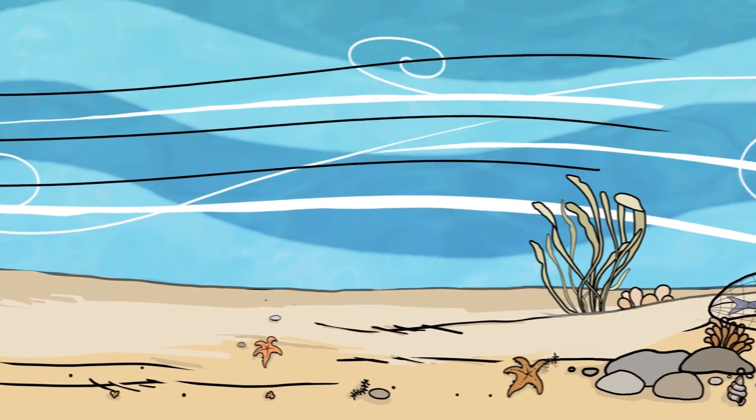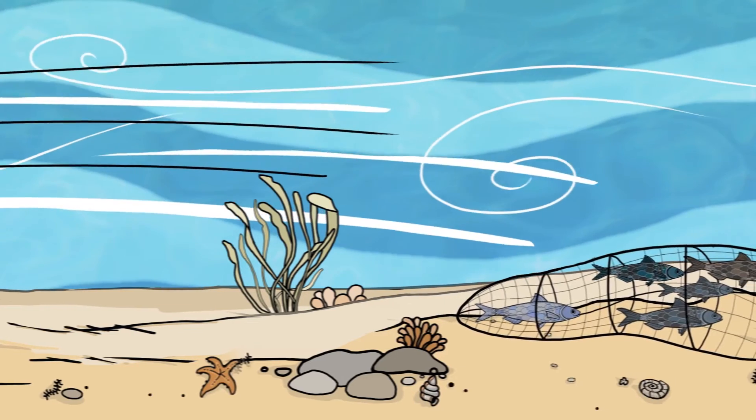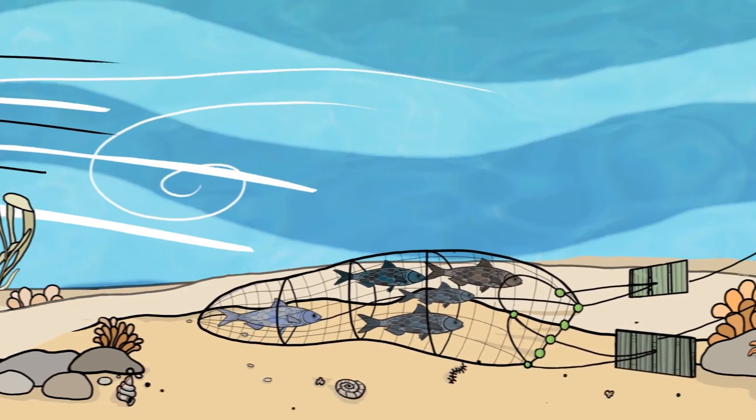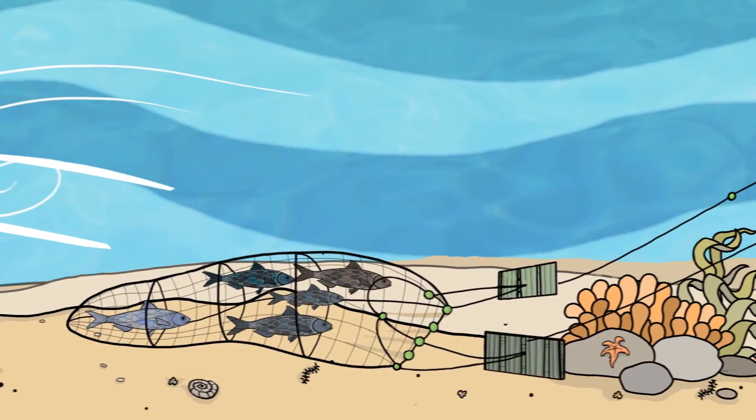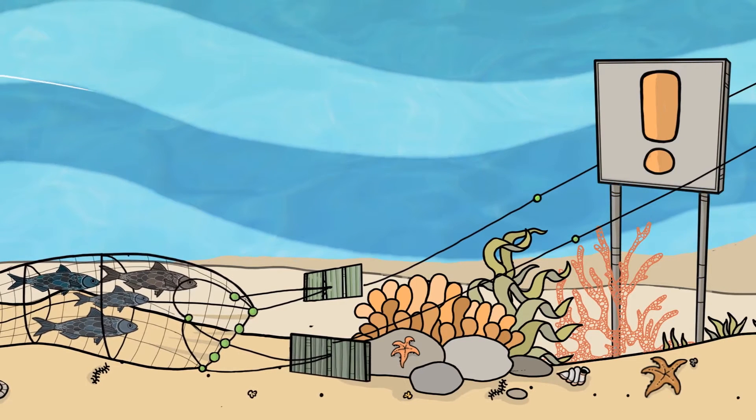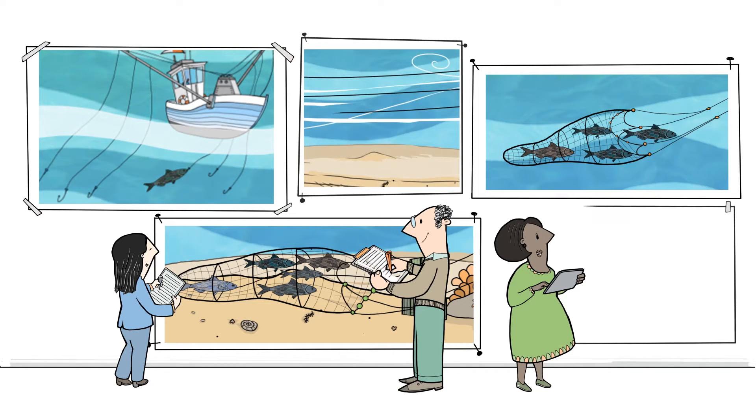For example, in areas with strong currents or tides, the seabed and its inhabitants are accustomed to regular disturbance. Here, the impacts of bottom trawling are often less significant than in areas with more sensitive ecosystems, such as coral reefs. Whether or not a certain fishing technique can be used sustainably depends on many factors.